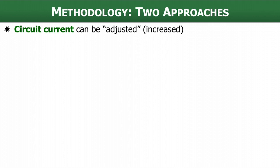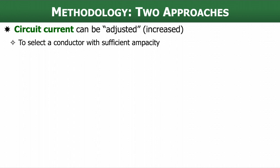So what about our methodology? There are really two approaches to determining what conductor is going to be right for a given circuit. The first is what I call adjusting the circuit current — we apply some factors to the circuit current through math to come up with a new adjusted circuit current. Then once we have that adjusted circuit current, we can pick a conductor that has the correct ampacity for it.